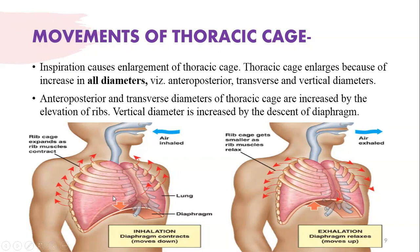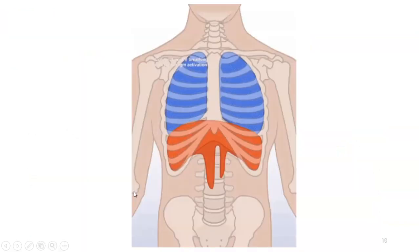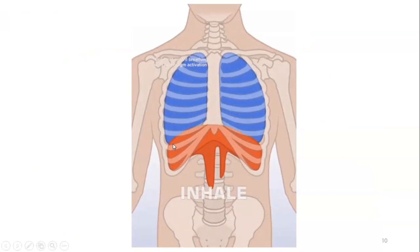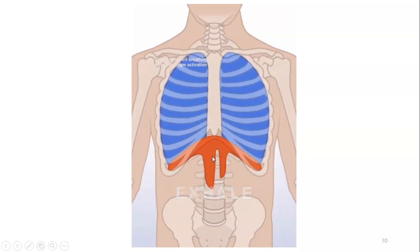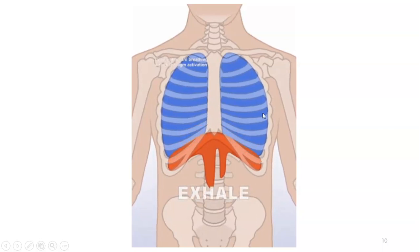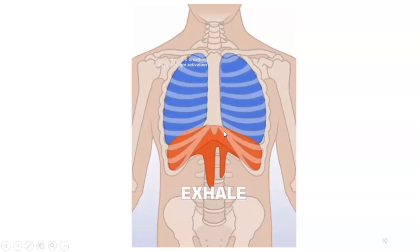The anteroposterior and transverse diameter of the thoracic cage are increased by elevation of the ribs — the rib cage expands as the rib muscles contract. The vertical diameter is increased by the descent of the diaphragm. In the animated video you can see the diaphragm moving down and the chest wall expanding. Conversely, when the diaphragm moves upward and the ribs relax, the thoracic wall and lung size decreases.